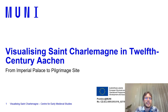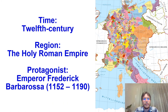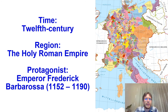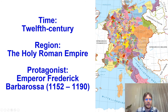I'm Vedran Solovsky and I'll be presenting 'Visualizing Saint Charlemagne in 12th century Aachen: from Imperial Palace to Pilgrimage Site.' The topic concerns the 12th century in Europe, specifically the Holy Roman Empire. The protagonist is Emperor Frederick Barbarossa, who reigned from 1152 to 1190.